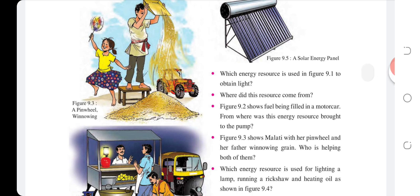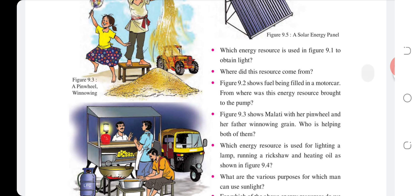Which energy resource is used in Figure 9.1 to obtain light? Where did this resource come from? Figure 9.2 shows fuel being filled in a motor car — from where was this energy resource brought to the pump? Figure 9.3 shows Malati with her pinwheel and her father winnowing grain. Who is helping both of them?